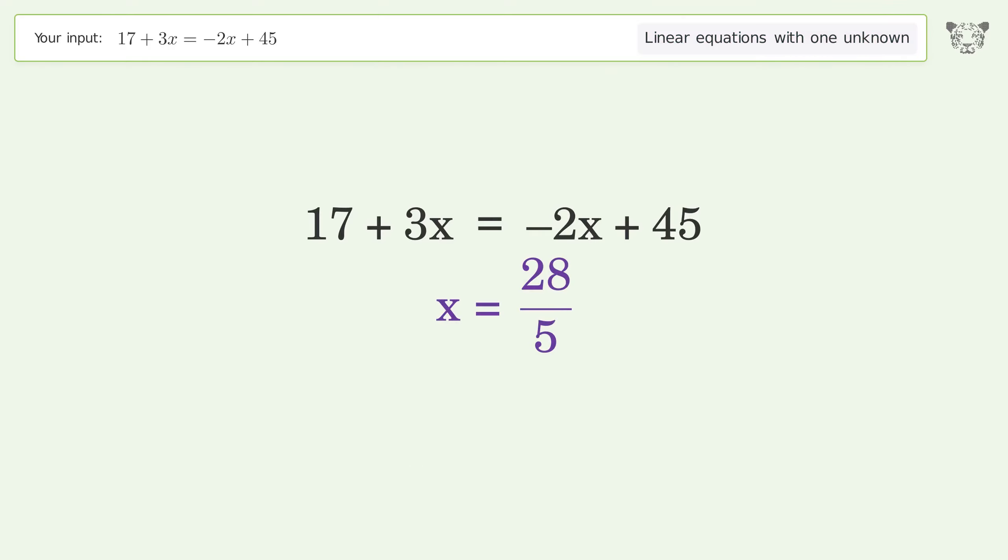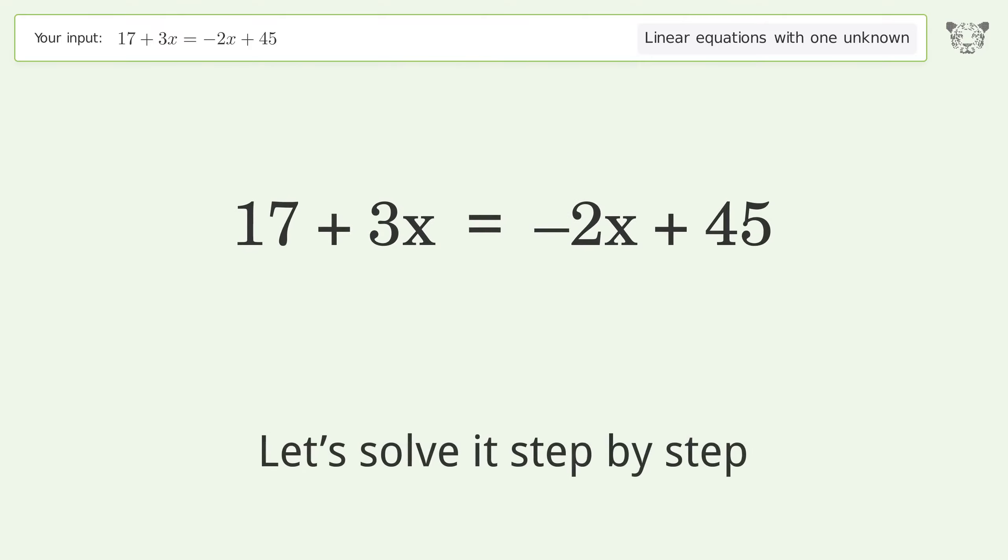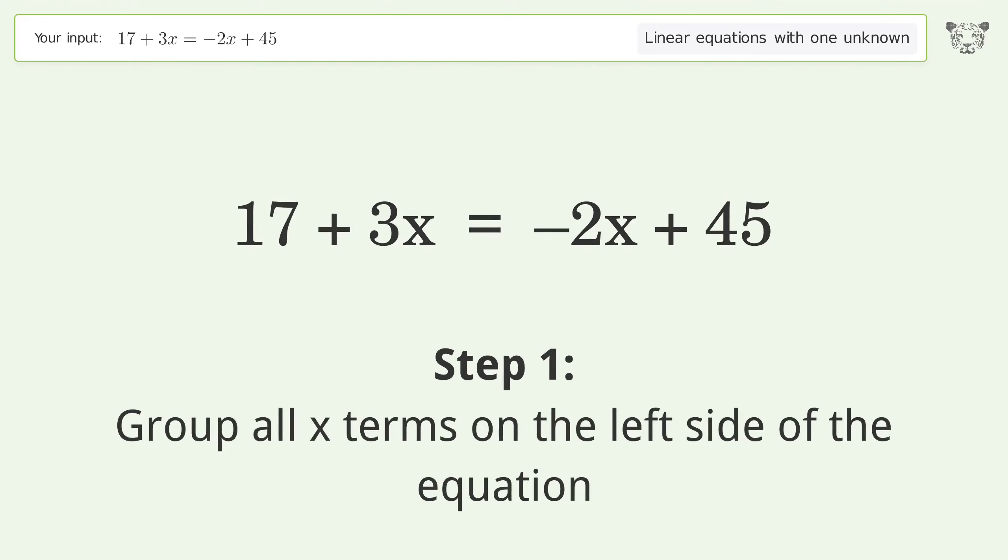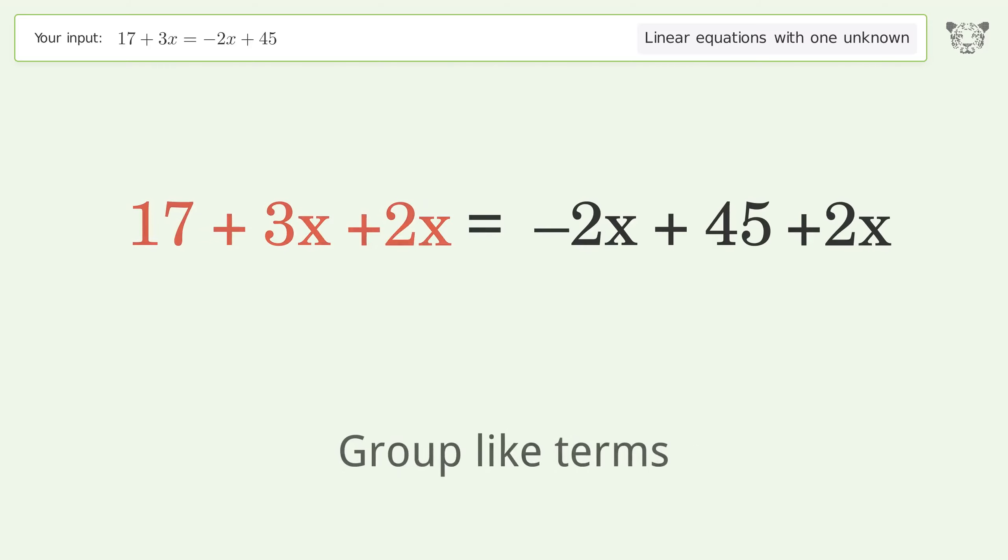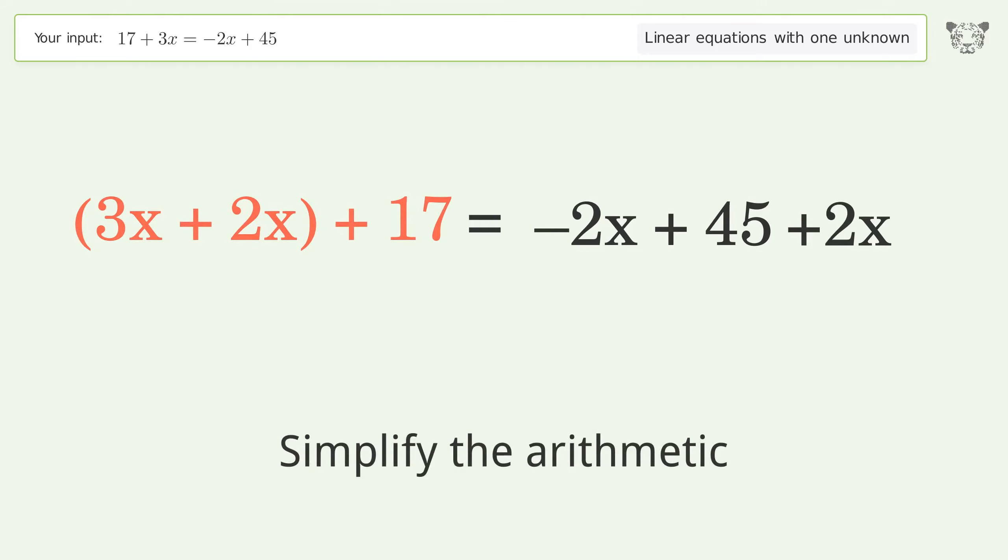You asked Tiger to solve this. This deals with linear equations with one unknown. The final result is x equals 28 over 5. Let's solve it step by step. Group all x terms on the left side of the equation. Add 2x to both sides. Group like terms.